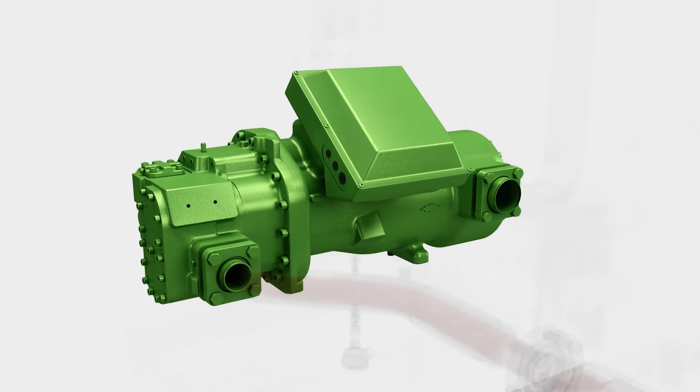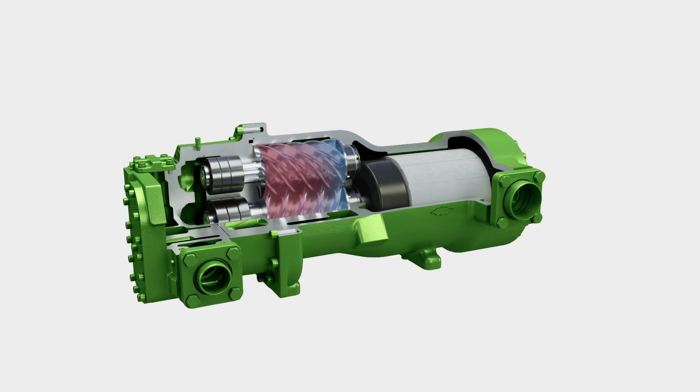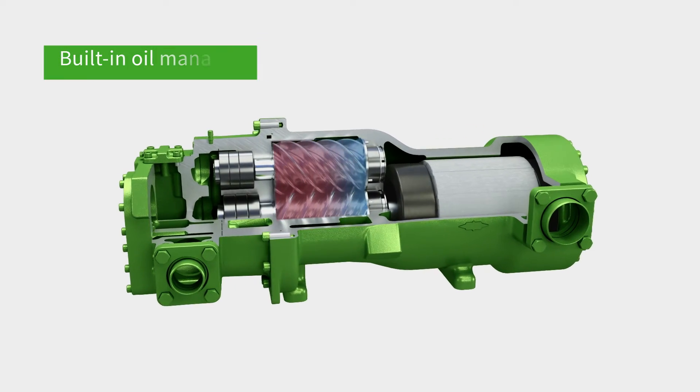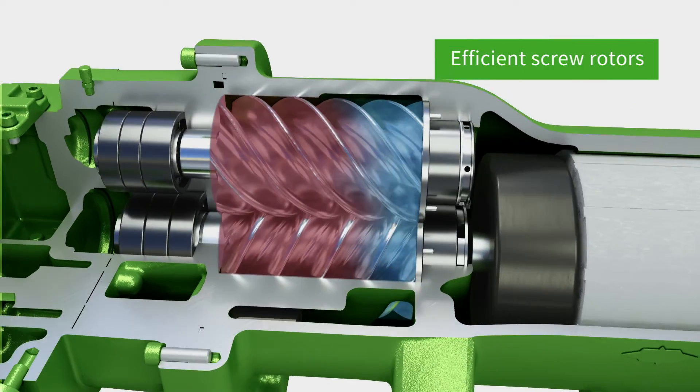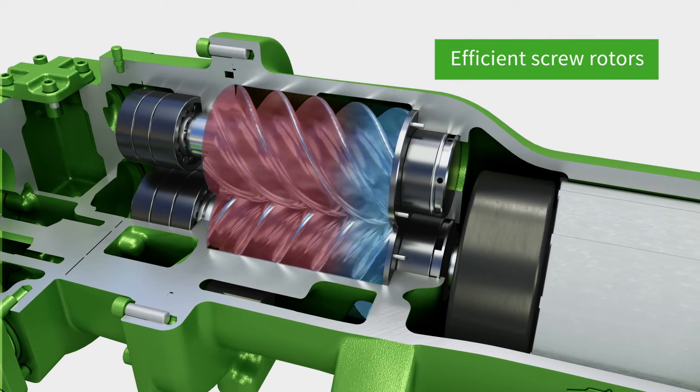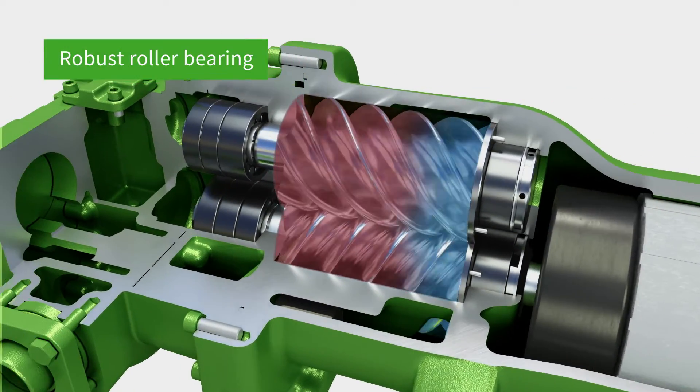The Bitzer screw expander has outstanding features such as its semi-hermetic design with built-in oil management, the efficient screw rotors with a variable speed range, and the robust roller bearing.